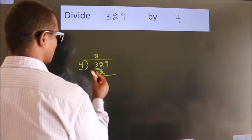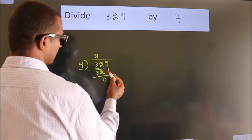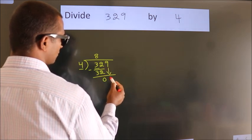Now, we should subtract. We get 0. After this, bring down the beside number. So, 9 down.